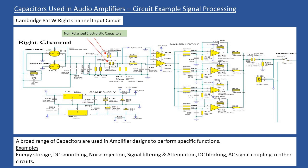Below the non-polarised electrolytic capacitors is a power supply section. It's very common to see both non-electrolytic and electrolytic capacitors in the smaller amplifier power supply. After regulation, additional smoothing capacitors and high frequency noise removal capacitors are added, because even voltage regulators can create some level of electrical noise. One capacitor does not fit all functions — a very broad range of capacitors are selected to meet each specific function required.